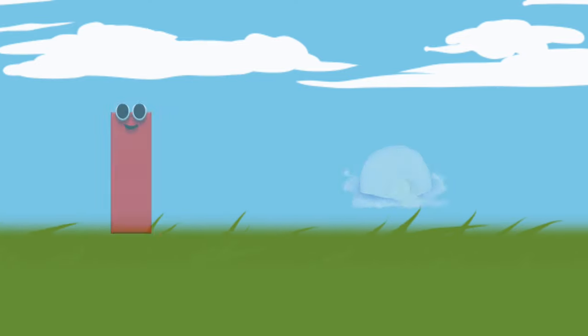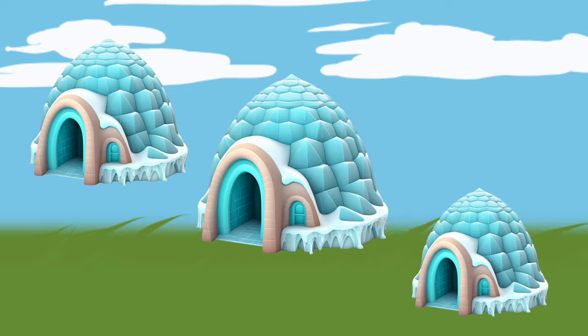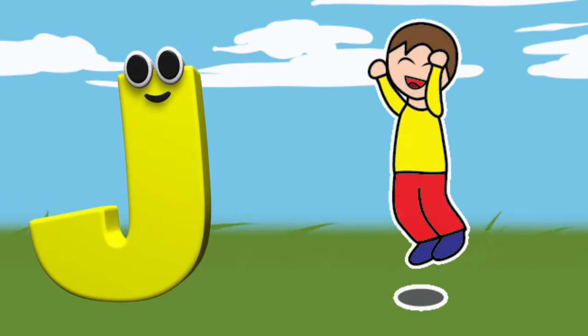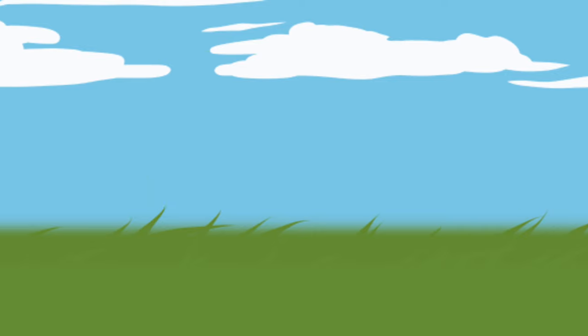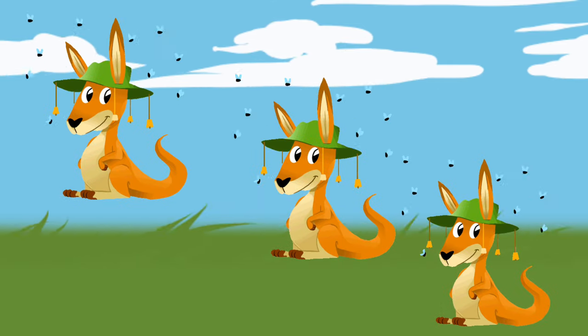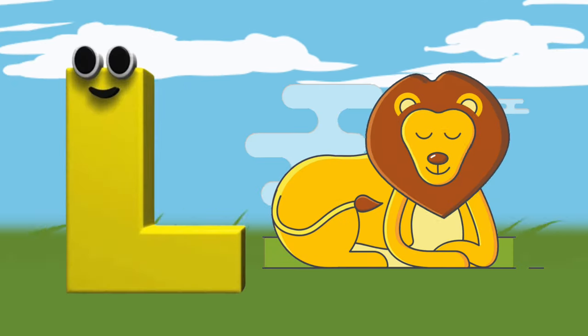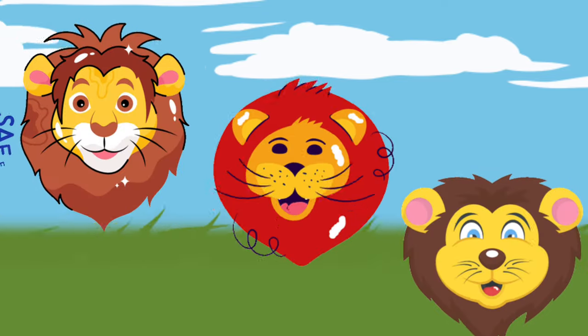I is for Igloo, i-i-Igloo. J is for Jump, j-j-Jump. K is for Kangaroo, k-k-kangaroo. L is for Lion, l-l-Lion.